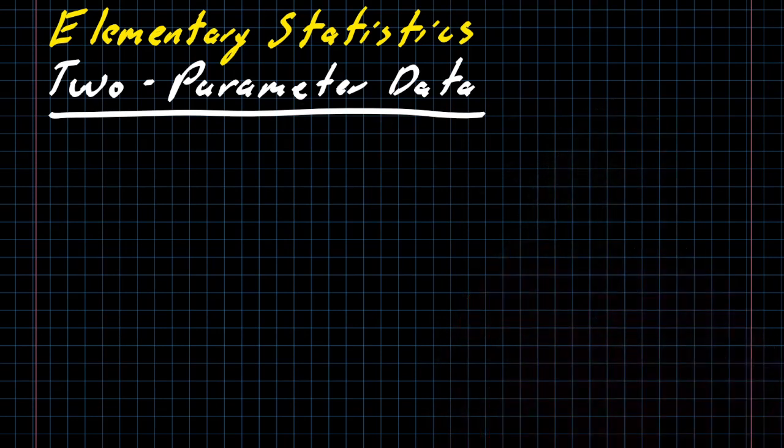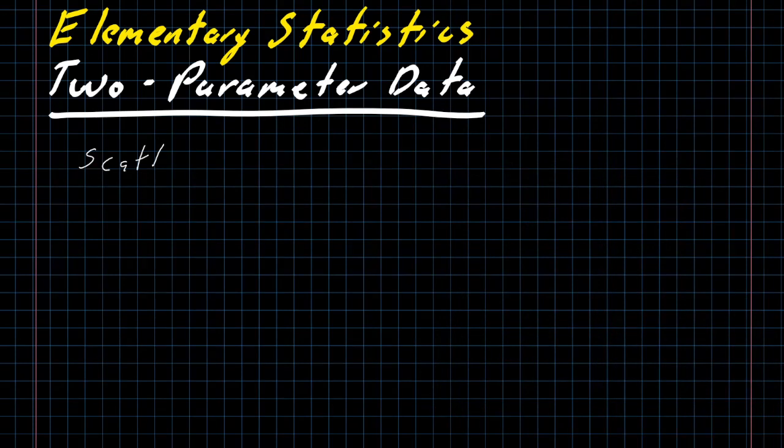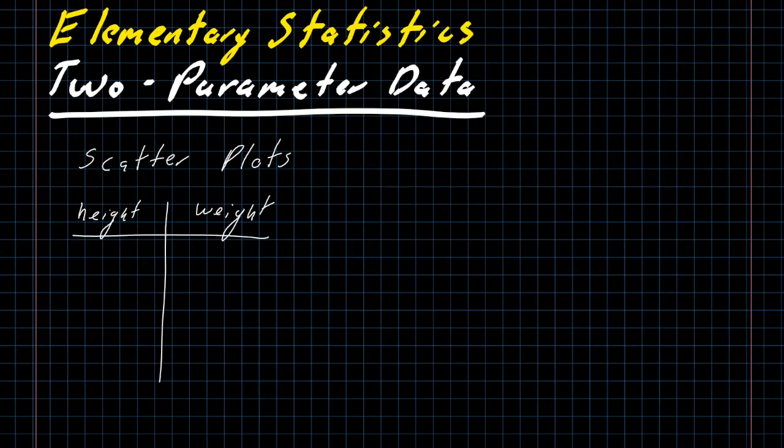So let me get my head out of the way and let's start in. The most fundamental tool for analyzing two parameter data is a scatter plot. And I'm going to go ahead and look at some height and weight data just to give us something to play around with.